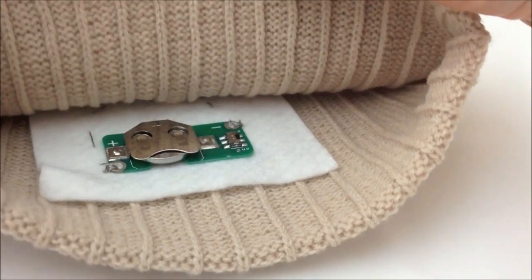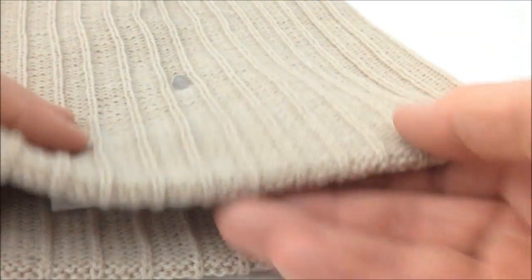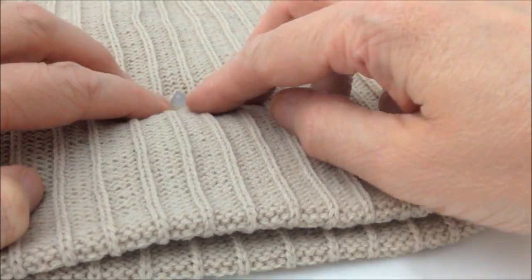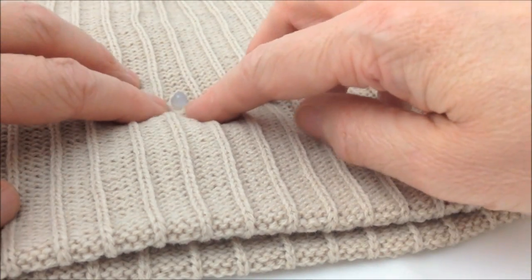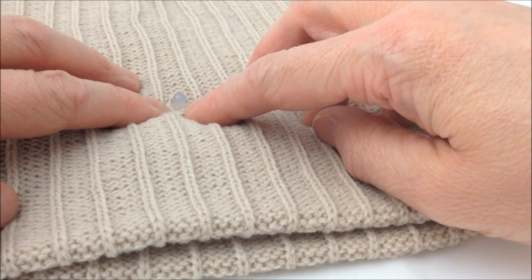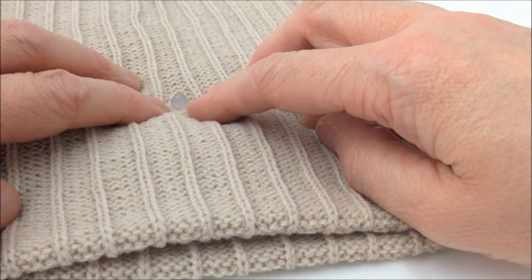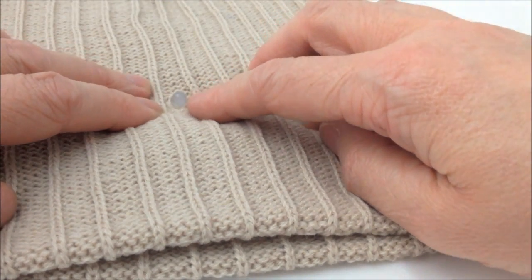The circuit sits inside the hat just underneath this front part, and the LED is just poked through one of the holes in the knitted fabric. You just need to tease the stitches, the loops, and the stitches in the hat fabric apart just to enable the LED to poke through.